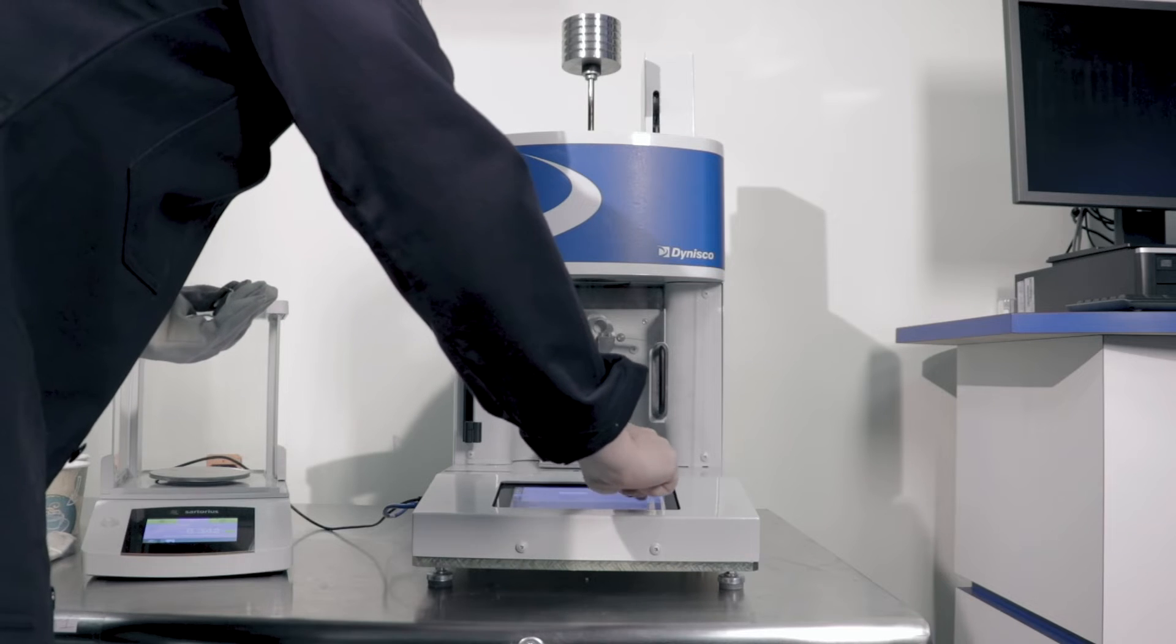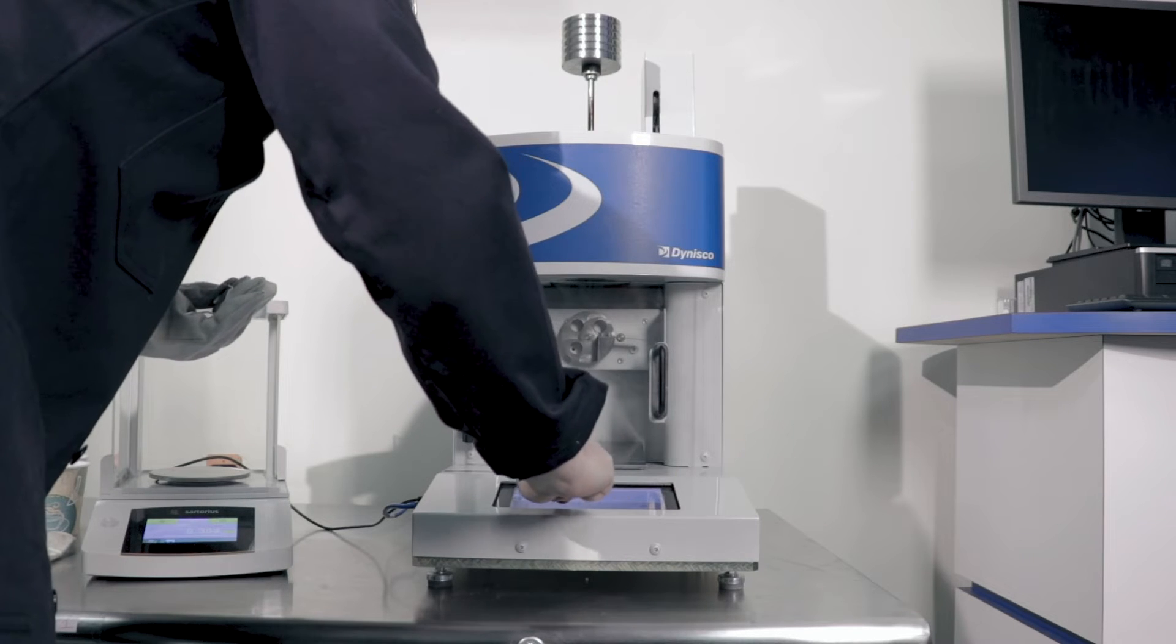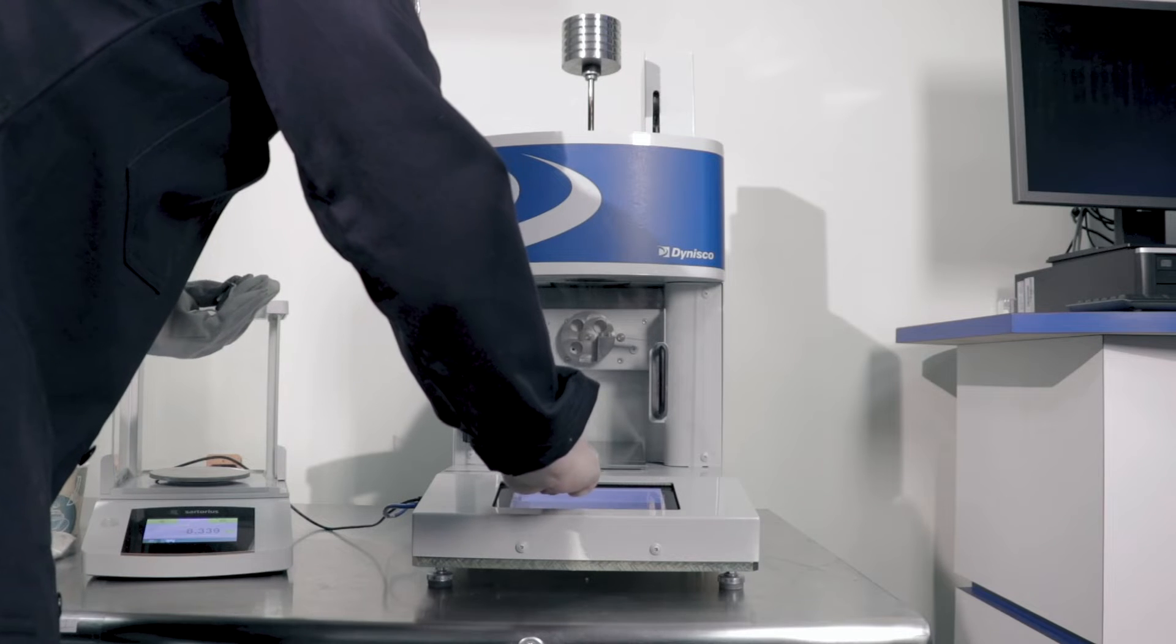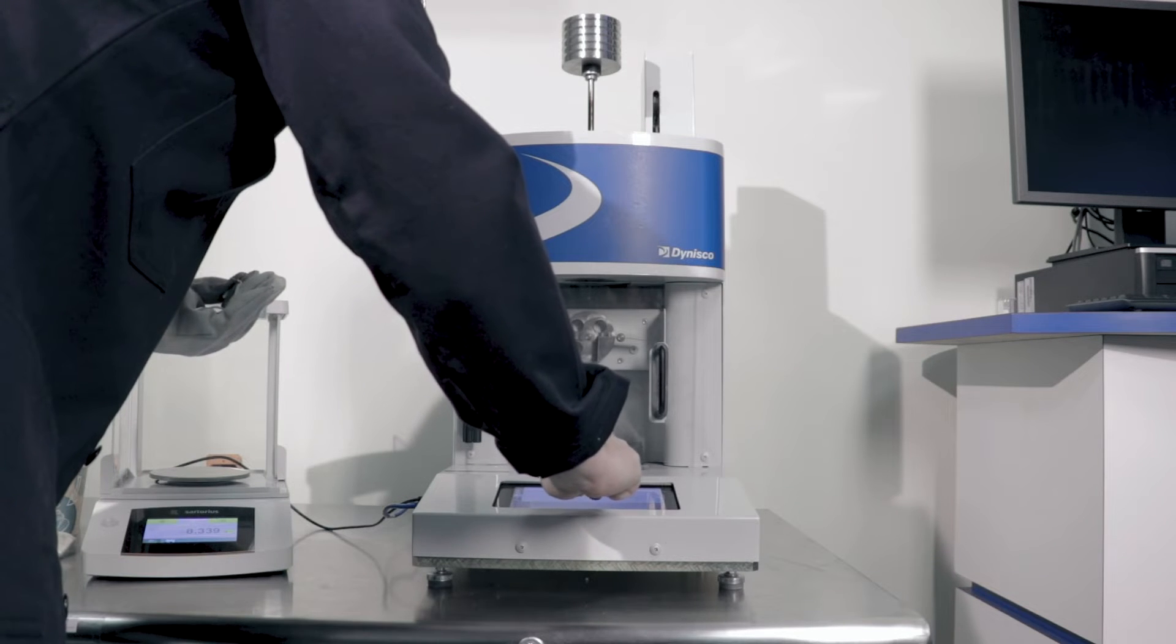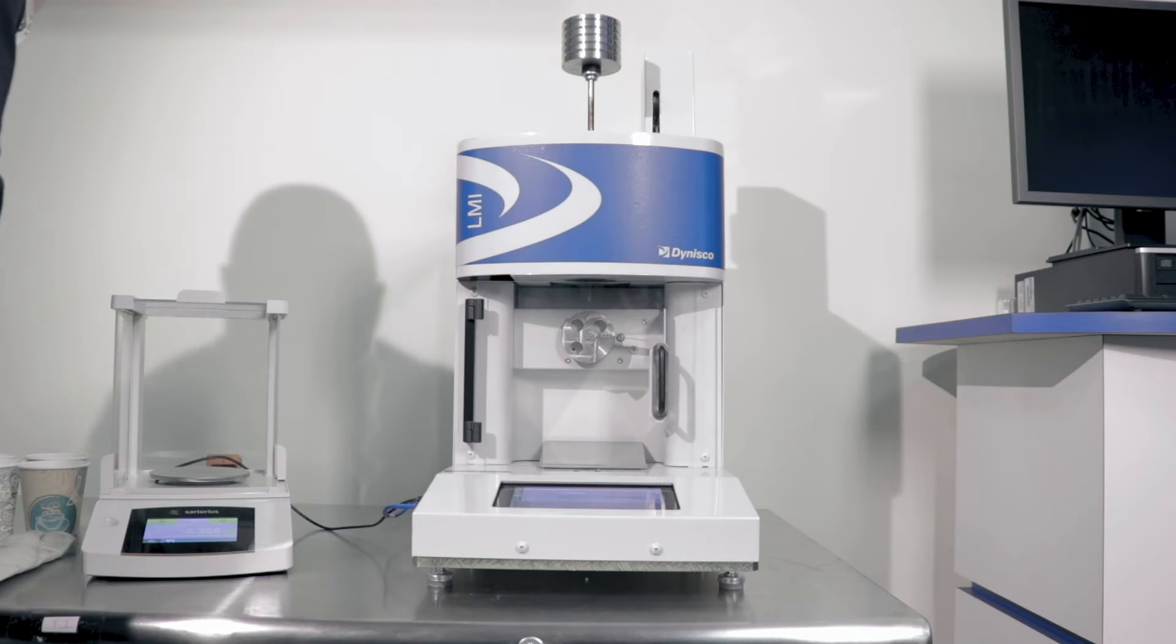First, the attendant sets the parameters for the test based on the conditions found in the relevant ASTM standard, respective ISO standard, or the supply specifications for the polymer by using the machine's built-in user interface.